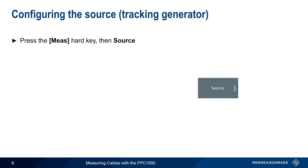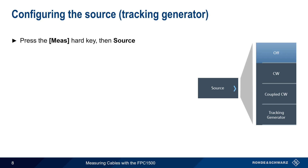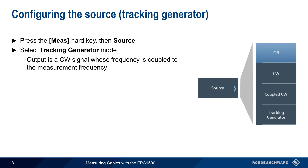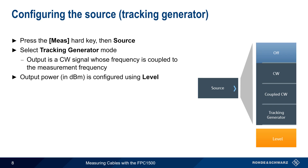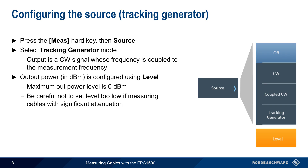To configure the FPC's tracking generator, press the Measure hard key and then Source. For cable measurements, we want Tracking Generator mode, in which the output of the generator is a CW signal whose frequency is coupled to the measurement frequency. That is, the source output frequency sweeps at the same rate as the measurement. The output power of the generator is also configurable in units of dBm using the Level key, with the maximum output power level being 0 dBm. Care should be taken not to set the tracking generator level too low when measuring cables with significant attenuation, as this can lead to inaccurate results.